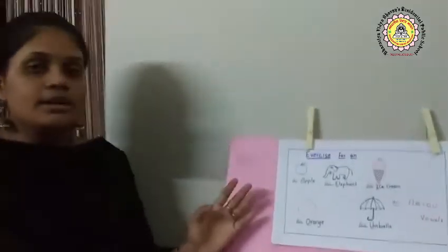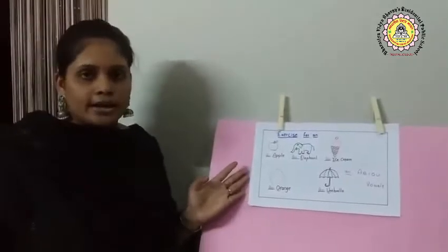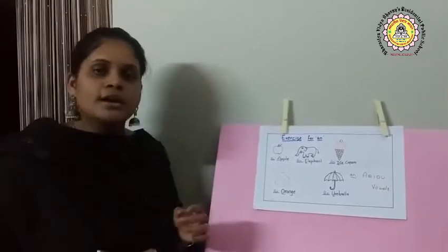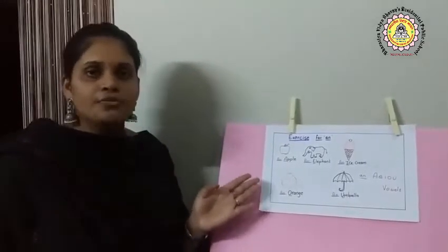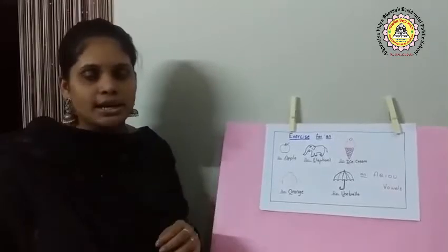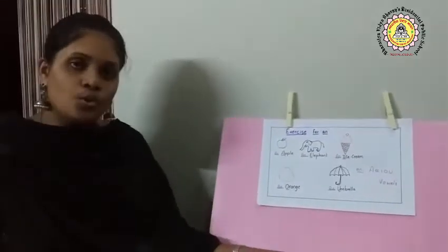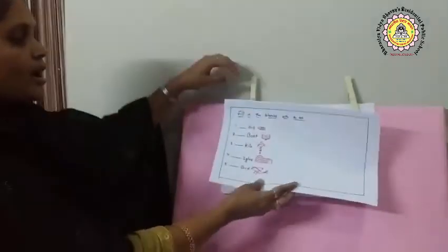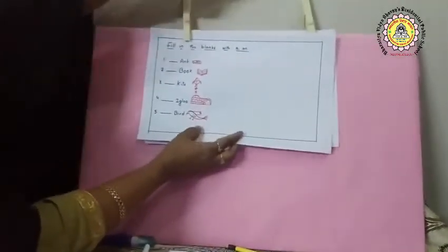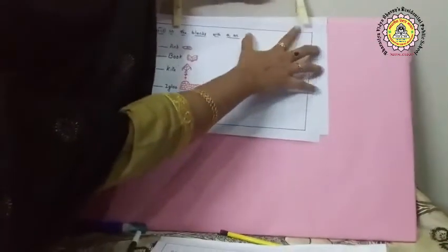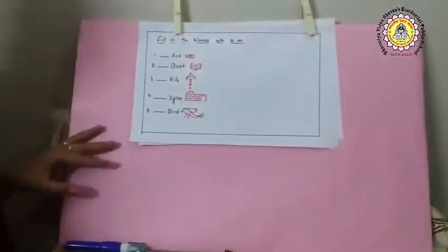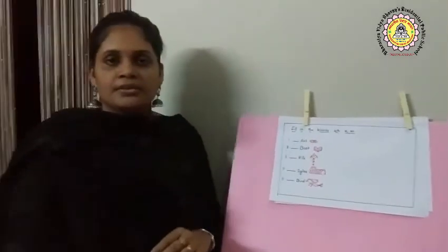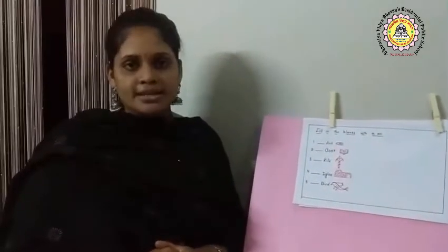This is how we find whether to use A or AN based on the starting letters of the nouns. If the noun starts with a vowel, we write AN, and if it starts with a consonant, we write A. Here I am giving you homework, children: fill in the blanks with A or AN. Check the starting letters and answer the questions. Okay children, let's meet in my next class.